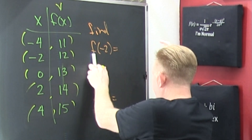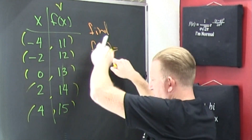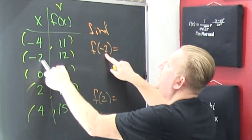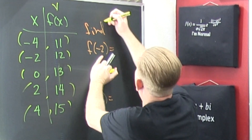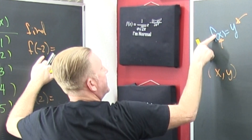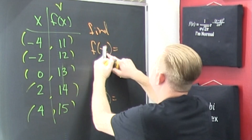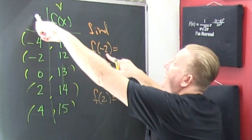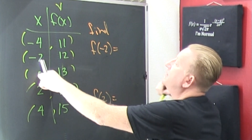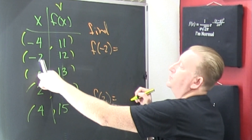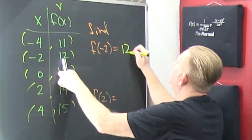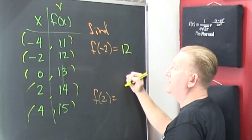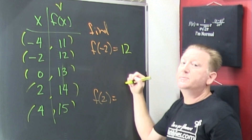So when I'm looking at f of minus 2, here we have f of — what am I trying to find? X is on the inside, so this is my x. I'm looking for the x's over here. There it is — minus 2. I put a 12 right here, because f of minus 2 is 12. That's the correspondence in this relationship.